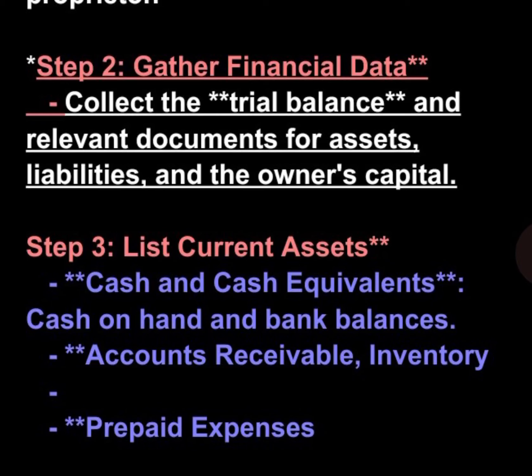Loans currently due within one year, unpaid but incurred expenses, accrued bills, and deferred revenue — payments received in advance for goods or services not yet delivered. Amounts the business owes to suppliers.